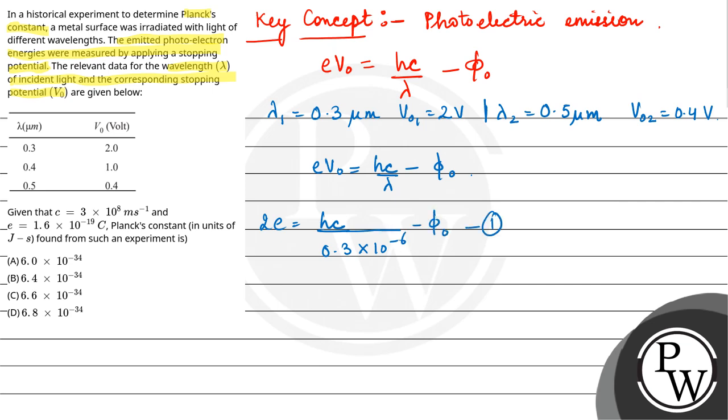For the second wavelength, 0.4e equals hc/(0.5×10⁻⁶) minus φ₀. This is our equation 2.